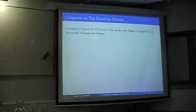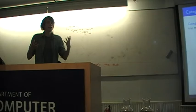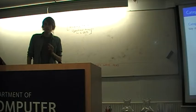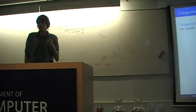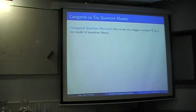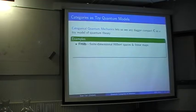One of the nice things about categorical quantum mechanics that I don't think has been fully exploited yet is the way it lets us see any dagger compact category as a toy model of quantum theory. We can formulate ideas from quantum theory like measurement and observables in the language of these categories. And turning that around, you can see any one of these categories as such a toy model. These toy models are interesting in the way they let you separate out different conceptual aspects of quantum theory like entanglement or superposition. But not too many of these have been studied yet.